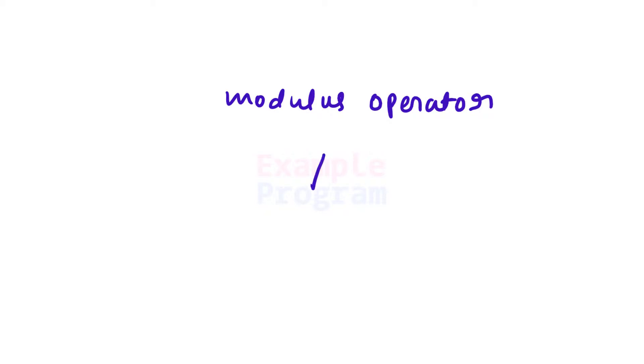Now we know how to determine whether a number is even or odd. But how do we get the remainder in C# programming? In most programming languages we have an operator called the modulus operator, denoted by the percentage symbol. When you use this operator it will give the remainder value — for example, num1 modulus num2 will return the remainder of that division.